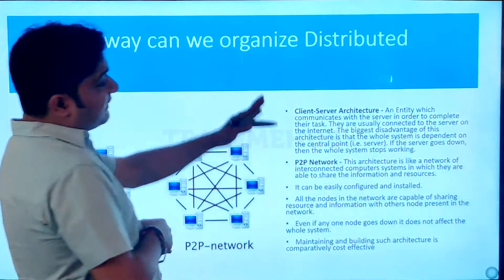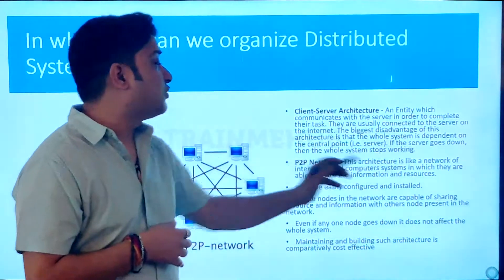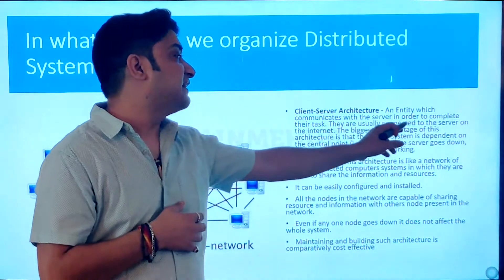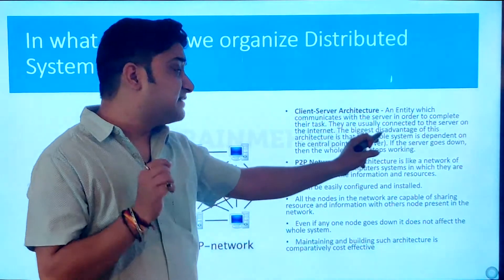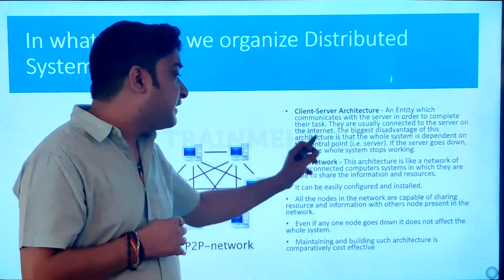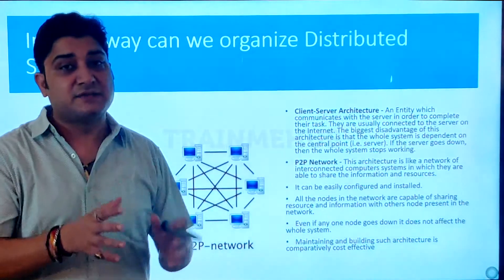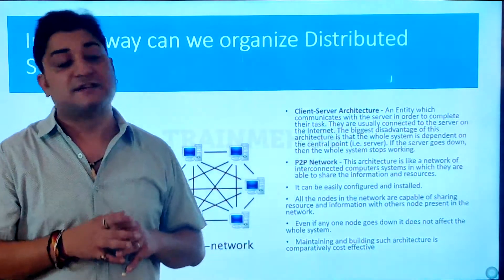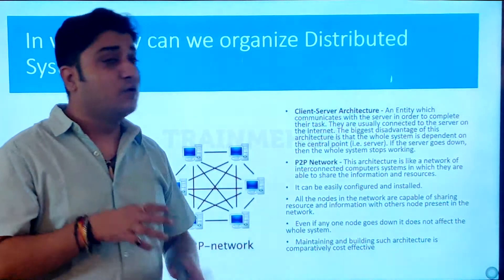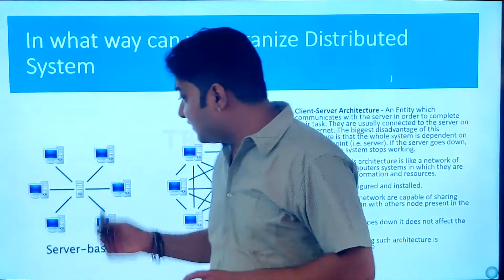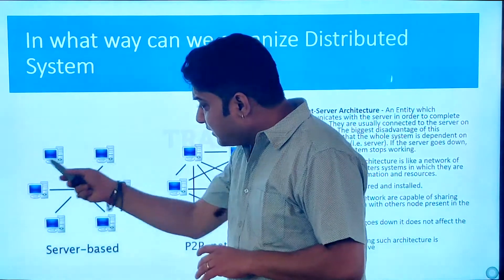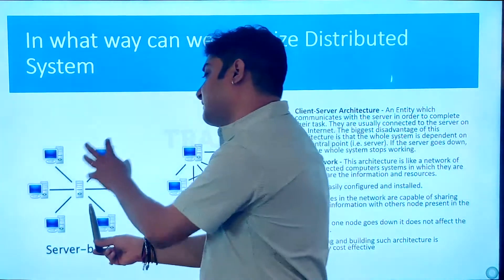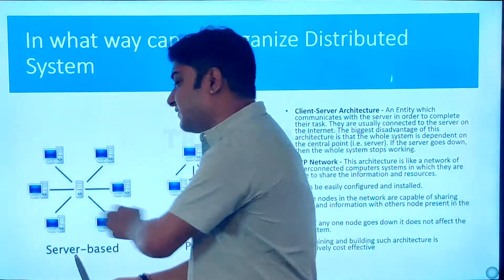In client-server architecture, an entity communicates with the server to complete their task, and they are usually connected to the server on the internet. The biggest disadvantage of this architecture is that the whole system is dependent on one particular central point — the server. If the server goes down, then the whole system stops. As you can see in the diagram, all computers are talking to just one point, and if that system goes down, the whole system goes down.